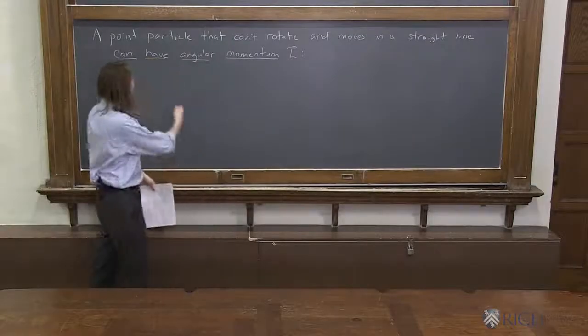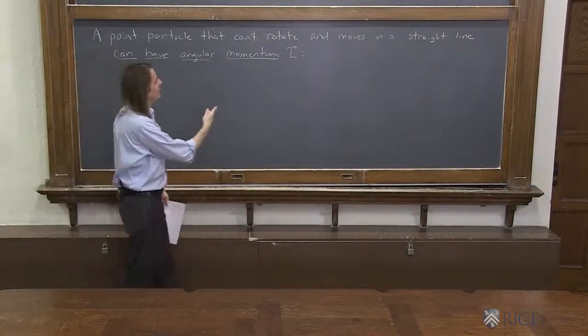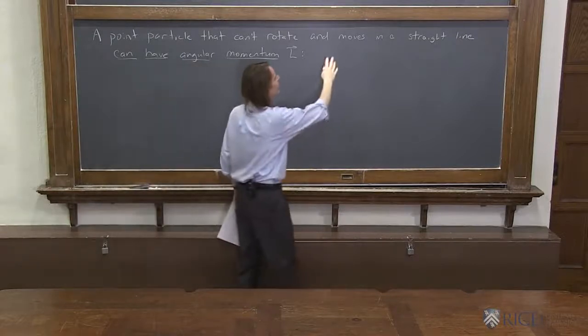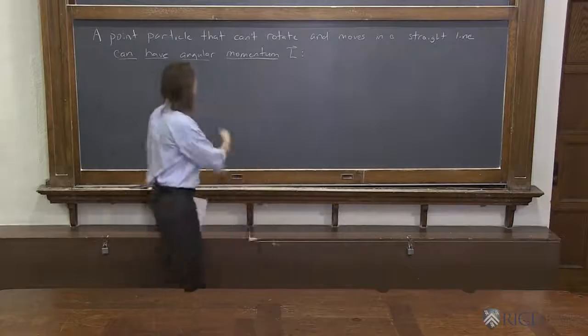So what we just realized is that even a point particle, a point particle that can't even rotate because it has no physical extent, and it's just moving in a straight line, it can still have angular momentum.